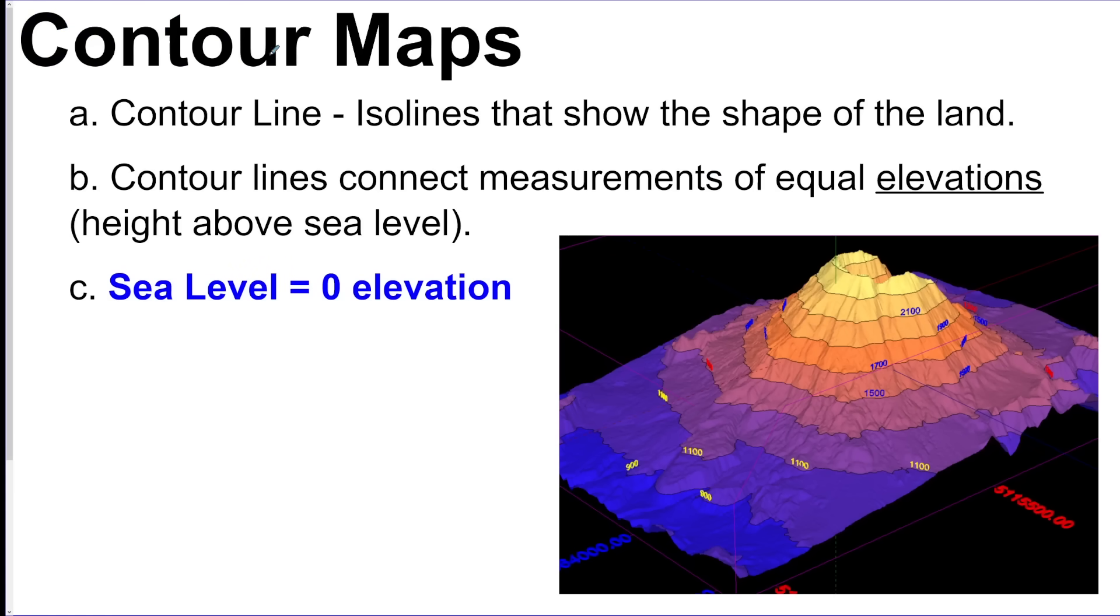So we got contour maps. These are going to be iso lines that show the shape of land. They measure elevation based off of sea level, sea level zero.